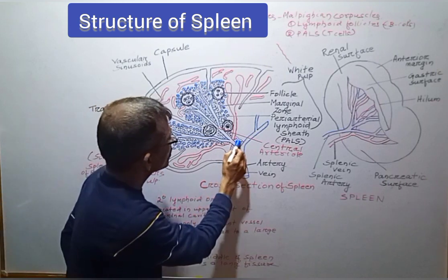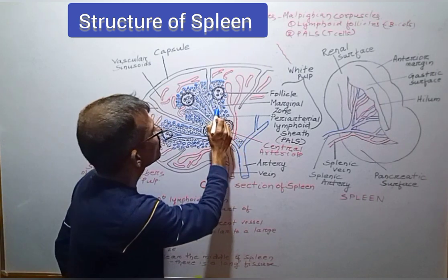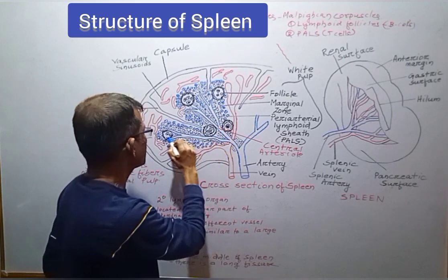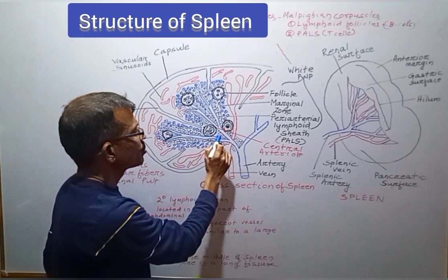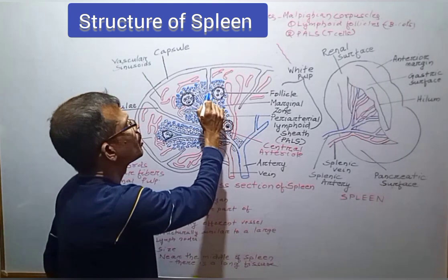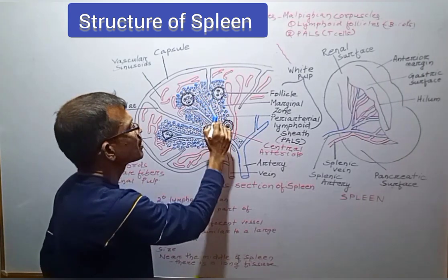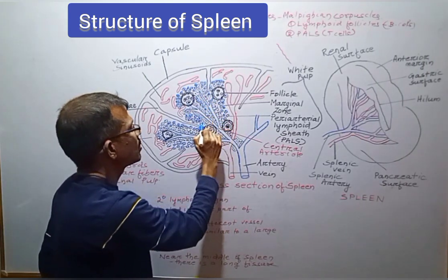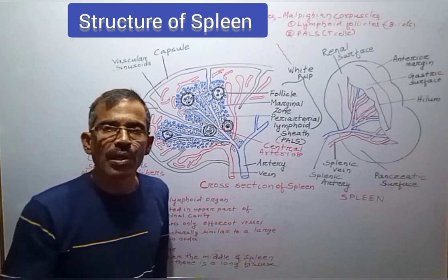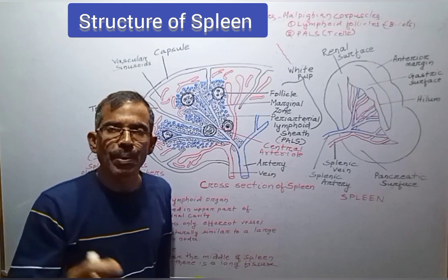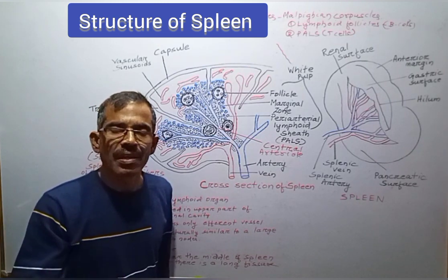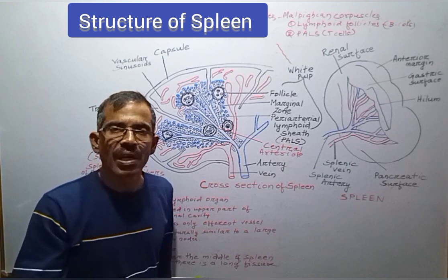The other part is the peri-arteriolar lymphoid sheath, which is rich in T-lymphocytes. It is a sheath of lymphoid tissue present around the central arteriole. This sheath of lymphoid tissue around the central arteriole is called peri-arteriolar lymphoid sheath, or PALS, and it is rich in T-lymphocytes.